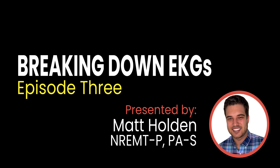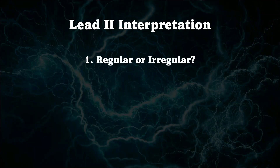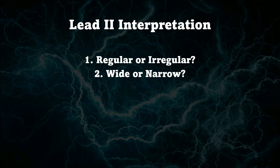So quick recap — this is lead two interpretation. We're going to look and see if the rhythm is regular or irregular. Step two: is the QRS wide or narrow? Step three: is the rhythm fast or slow? Fast is anything over 100, slow is usually less than 60.